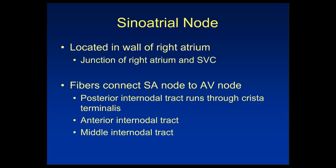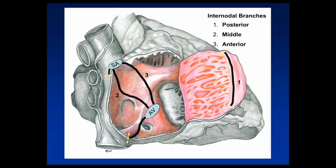The sinoatrial node is located in the wall of the right atrium at the junction of the right atrium and the SVC. There are fibers connecting the SA node to the AV node via the posterior, anterior, and middle internodal tracts. The posterior internodal tract runs through the crista terminalis, connecting the sinoatrial node to the atrioventricular node.